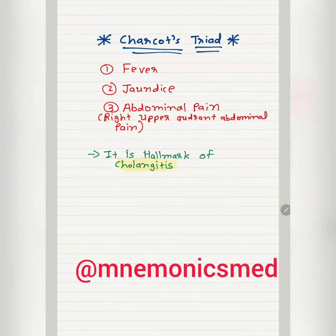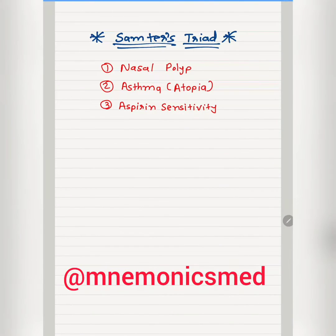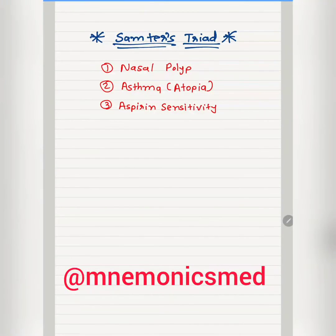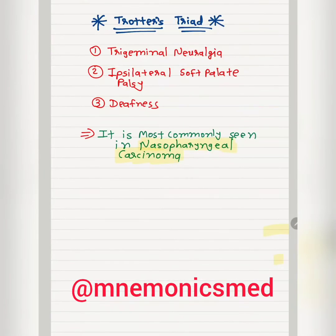Now we will learn about Samter's Triad. The three components are nasal polyps, asthma, and aspirin hypersensitivity. You have to remember these three things in Samter's Triad.